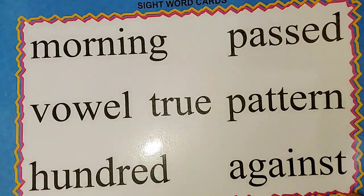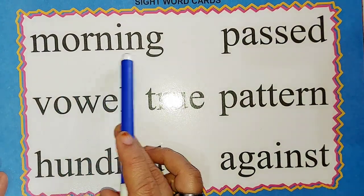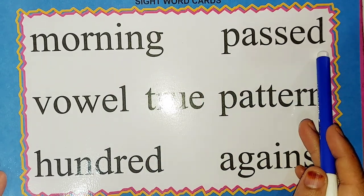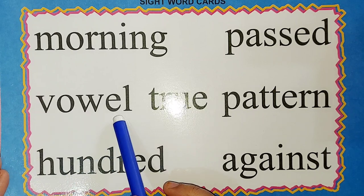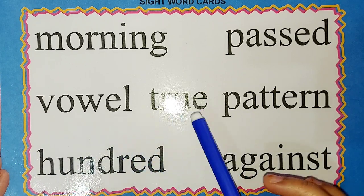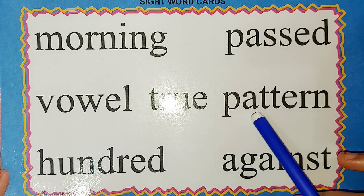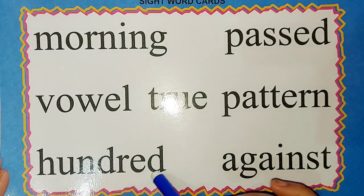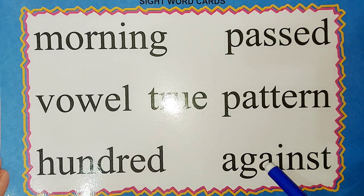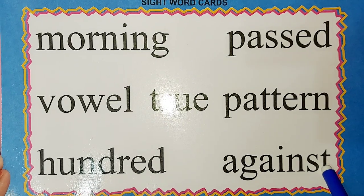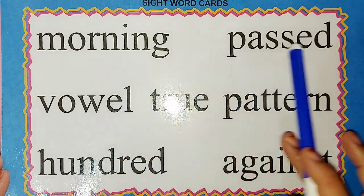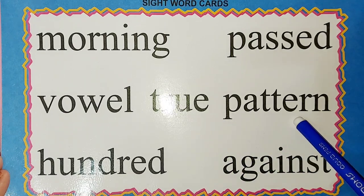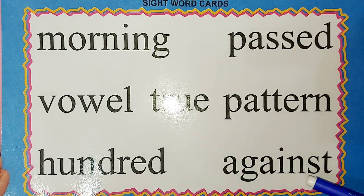The next word is M-O-R-N-I-N-G: morning. P-A-S-S-E-D: past. O-V-A-L: oval. T-R-U-E: true. P-A-T-T-E-R-N: pattern. H-U-N-D-R-E-D: hundred. A-G-A-I-N-S-T: against. Once again: morning, past, oval, true, pattern, hundred, against.